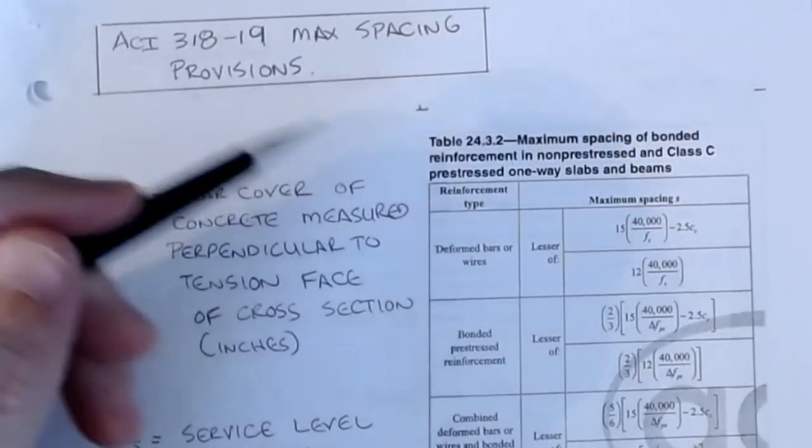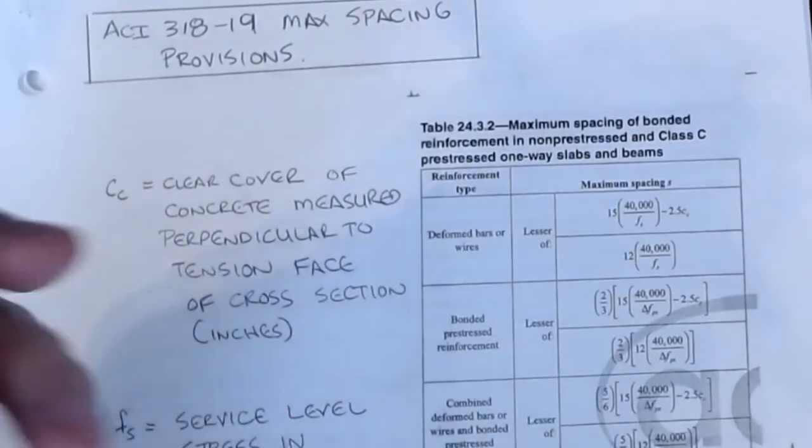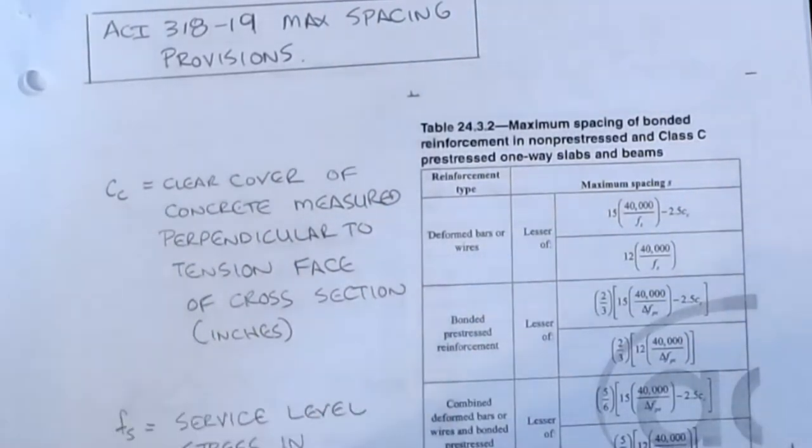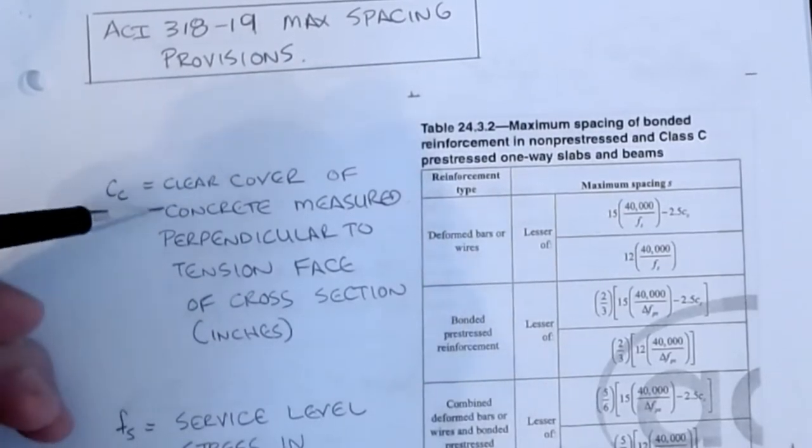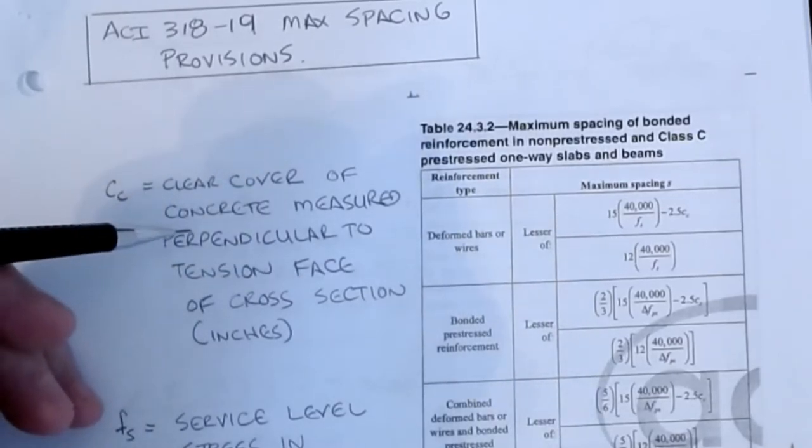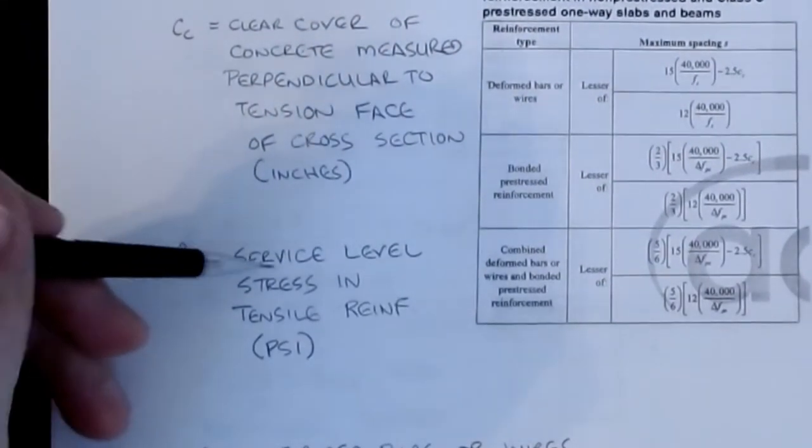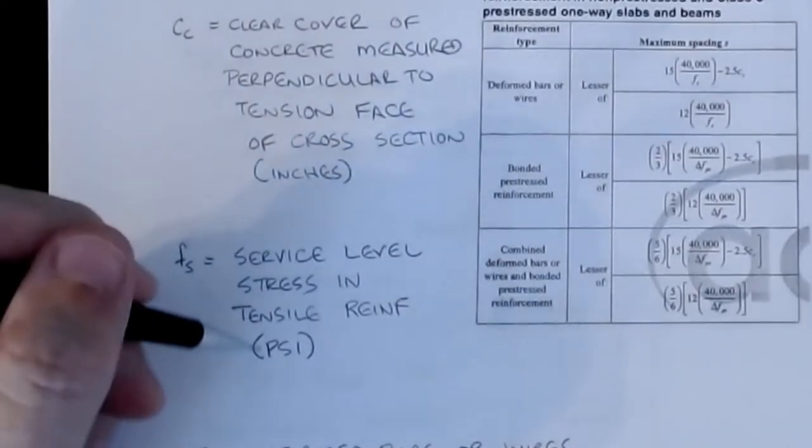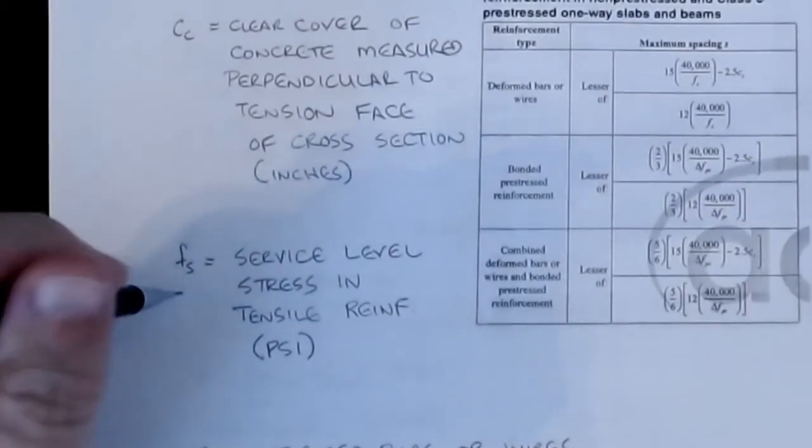That's the lesser of those two, and then likewise, if you get into prestressing strain, you have your requirements here, and then if we combine prestressing with deformed bars, then it's another form of this equation. We're going to be mostly playing with what's up here, this is the provisions. So this is the maximum spacing allowed between longitudinal bars. The idea being that if they get too far apart, then I'm able to develop cracks between the two. In this equation, C sub C is the clear cover of concrete measured perpendicular to the tension face of the cross-section, so this is kind of that DC dimension that we saw before.